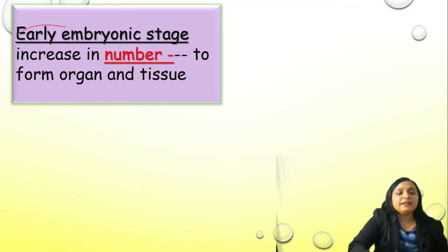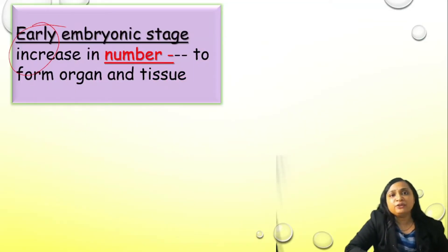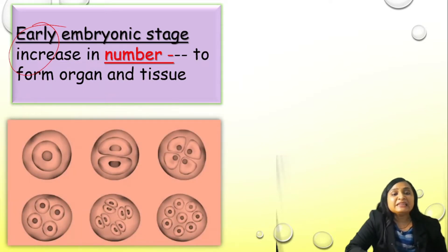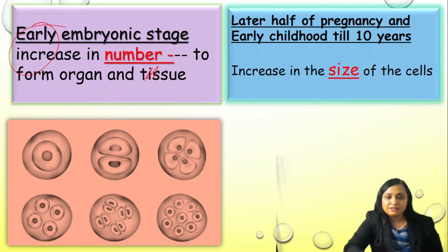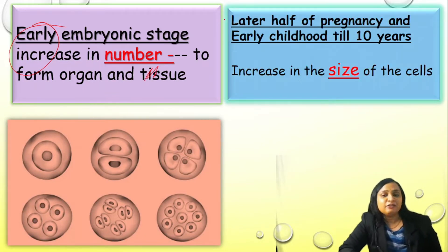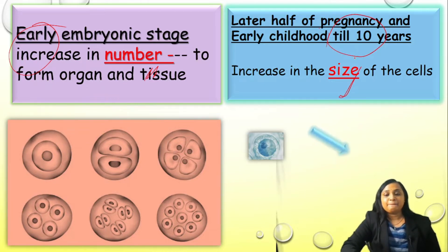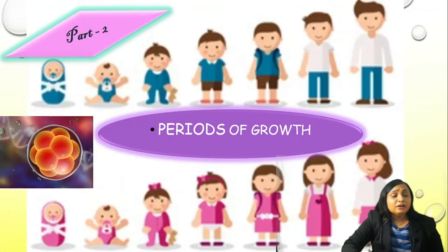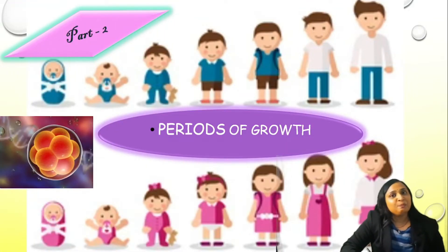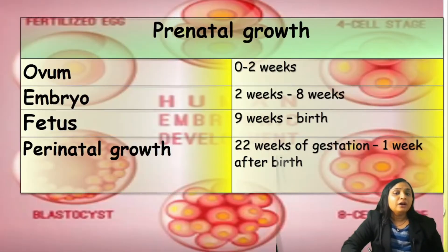If you see the early embryonic life where there is organogenesis, there will be an increase in the number of the cell. But in the later half of the pregnancy till 10 years of life, there will be increase in the size of the cell. So after Part 1, let us move to Part 2, that is, periods of growth.